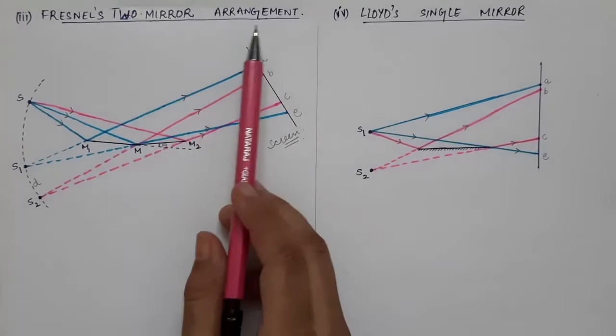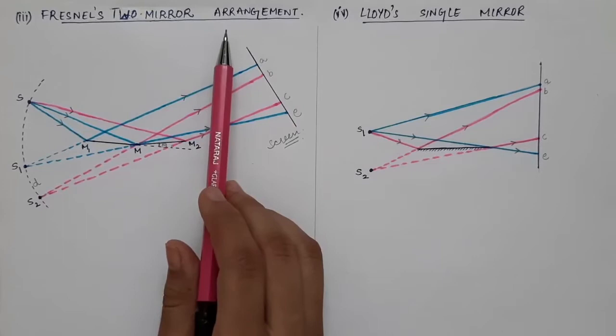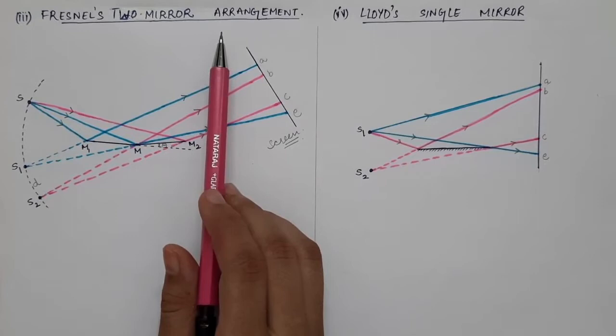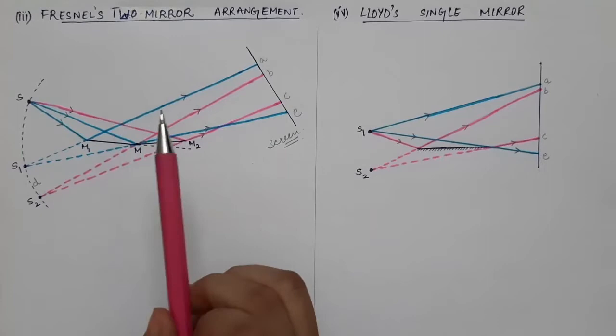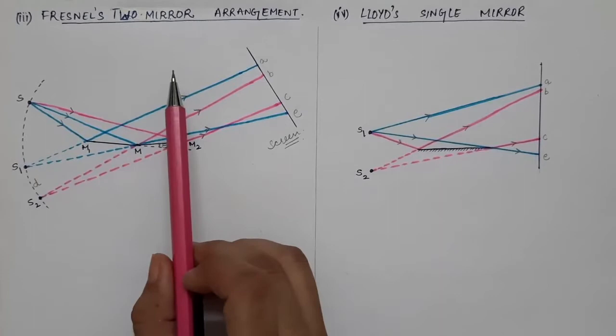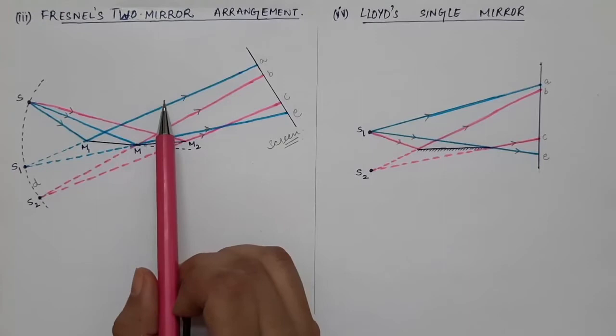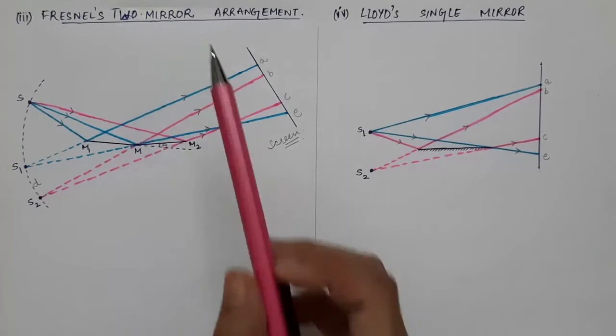The next experiment we are going to look at is Fresnel's two mirror arrangement, also called Fresnel's double mirror arrangement. This experiment is also based upon the principle of division of wavefront, as we had seen earlier in Young's double slit experiment and Fresnel's biprism. Those experiments were also based upon division of wavefront, where the interference takes place when two wavefronts obtained from a single wavefront interfere with each other and an interference pattern is observed.